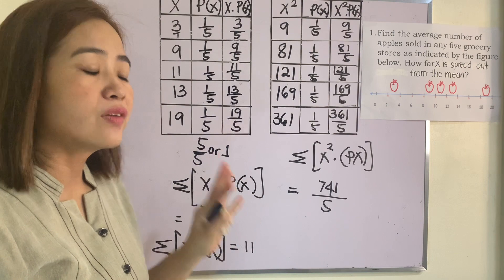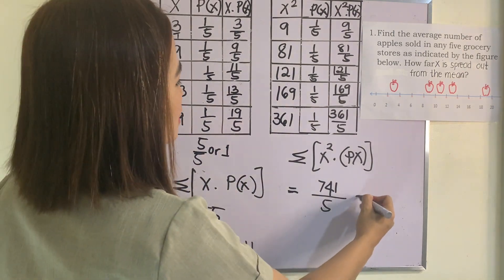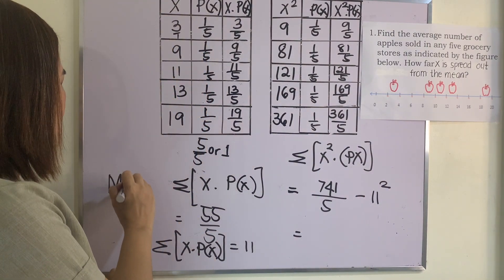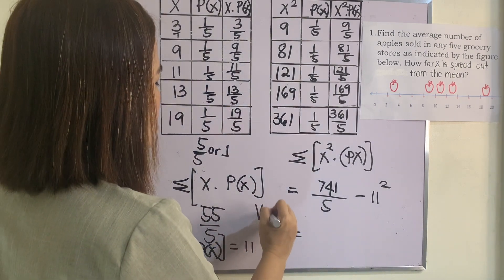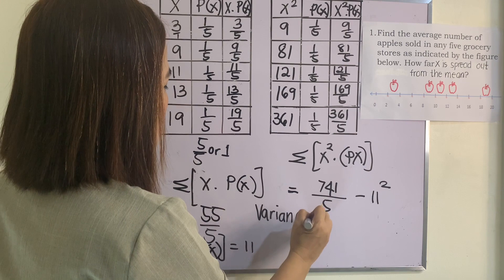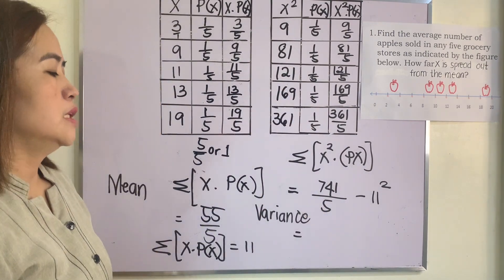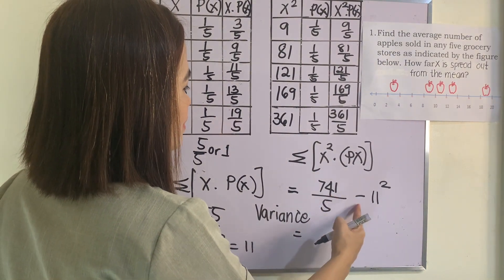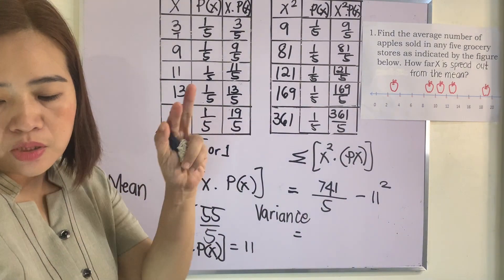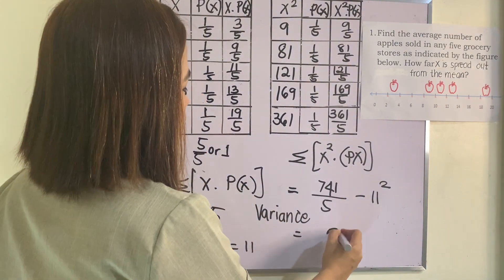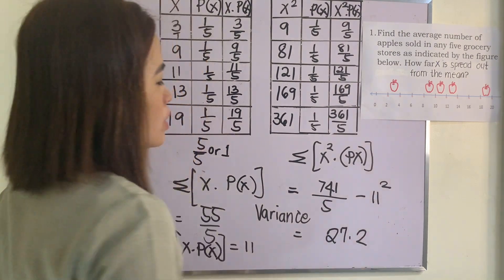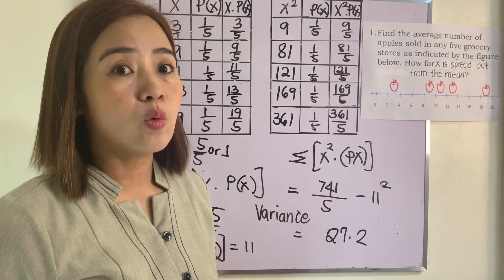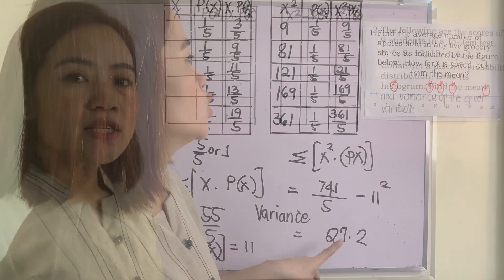To get the variance, you subtract the square of the mean from Σx²·P(x). The mean is 11. So the variance equals 741/5 minus 11². Using your calculator: press 741 divided by 5 minus 11 squared (11² = 121), and you will get 27.2. That is the variance of the discrete random variable.